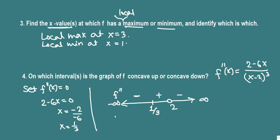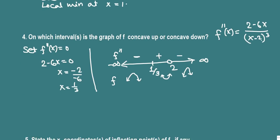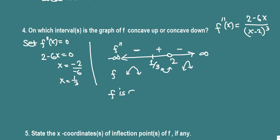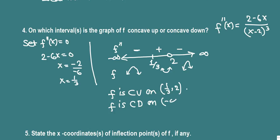A negative second derivative means the function is concave down, and a positive second derivative means concave up. So f is concave up on (1/3, 2), and f is concave down on (negative infinity, 1/3) union (2, infinity).